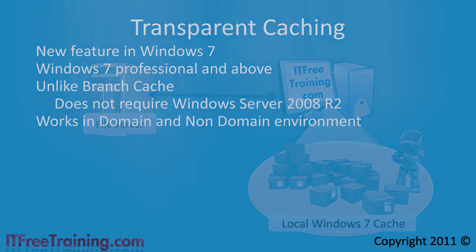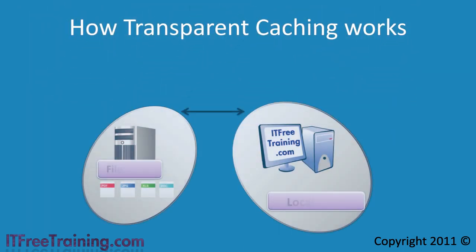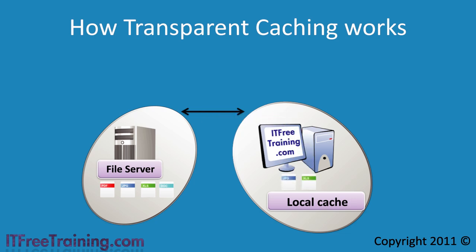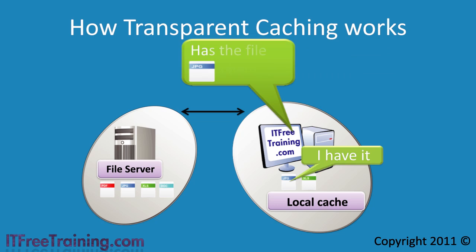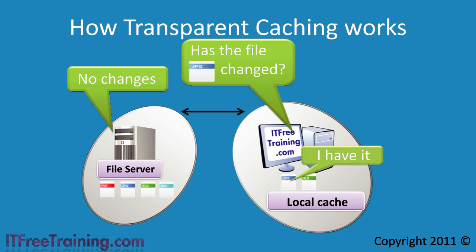Transparent caching works by keeping a copy of all files that are opened from a remote share. If the user attempts to read from the same file a second time, Windows checks to make sure that the file cached is the same as the one on the network. If the local cached file is the same as the one on the network, the local copy will be read rather than copying it across the network again.